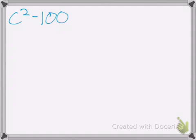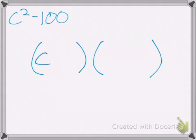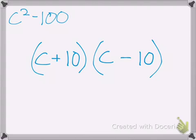Here is an example: c squared minus 100. You already know there are going to be two binomials as your final answer. Your first terms are going to be c because that's the only way you get c squared. The only way you get 100 is 10 times 10 — the square root of 100 is 10. And you know the signs have to be opposite. So you're done — it's really easy.